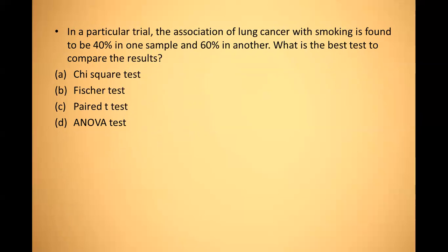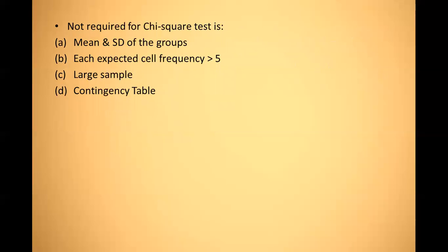Revisiting the lung cancer and smoking question: the association is 40% in one sample and 60% in another — two groups of proportions — so chi-square test is best. Next: which is NOT required for chi-square test? Options are mean and standard deviation of the group, each expected cell frequency more than five, large sample, and contingency table. Mean and standard deviation are not required for chi-square test — that is the answer.